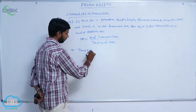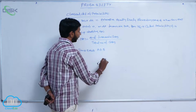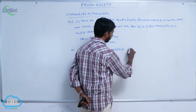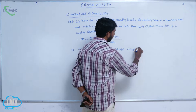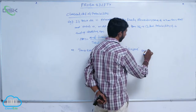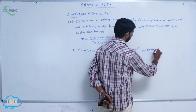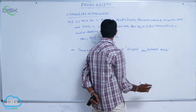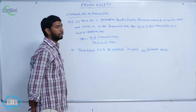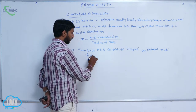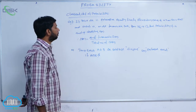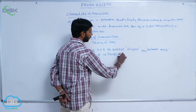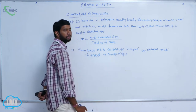Two events, capital A and capital B, are said to be disjoint or mutually exclusive events if A intersection B is equal to the empty set. The probability of the empty set is equal to 0.